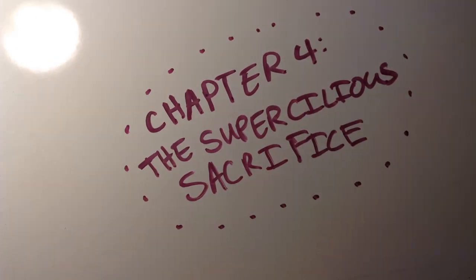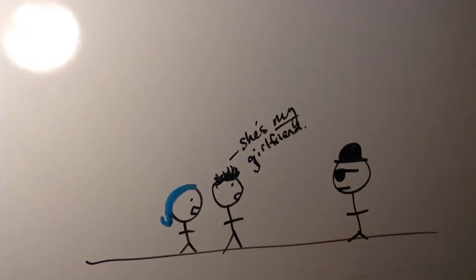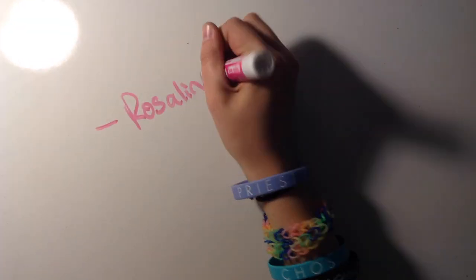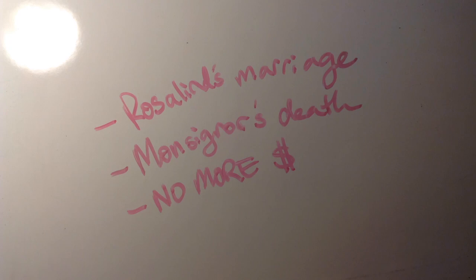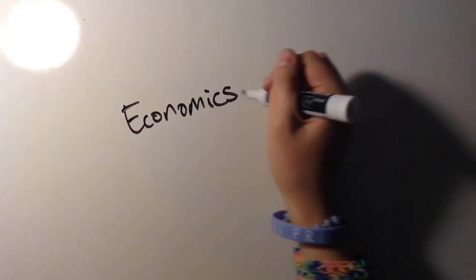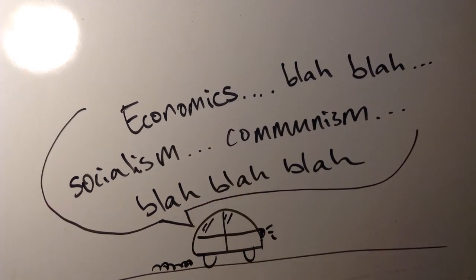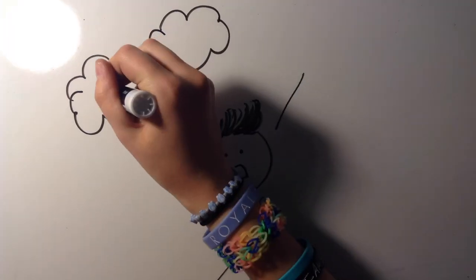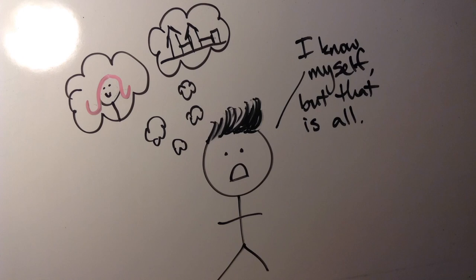Chapter four is entitled The Supercilious Sacrifice. The title comes from an incident where Amory takes charge of an illegally present woman and almost gets arrested. Three tragic events happen at this time: Rosalind's marriage, Darcy's death, and Amory's lack of income — causing Amory to sink into a final bout of depression. Chapter five, The Egotist Becomes a Personage, consists of deep thoughts and a debate between Amory and a stranger he hitchhikes with. The novel ends as Amory ponders youth, college, and Rosalind, and concludes with the statement: 'I know myself, but that is all.'